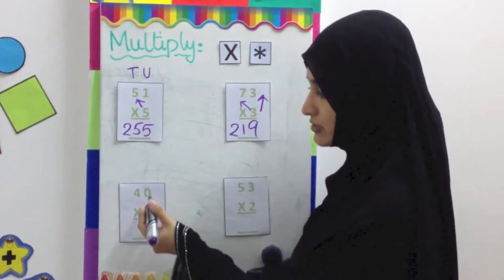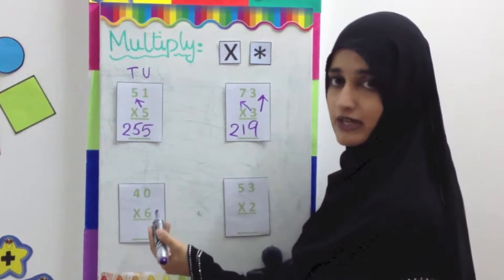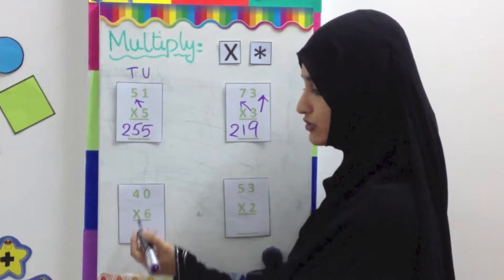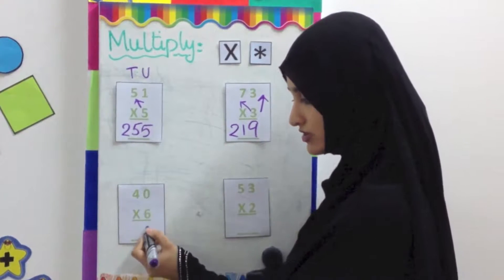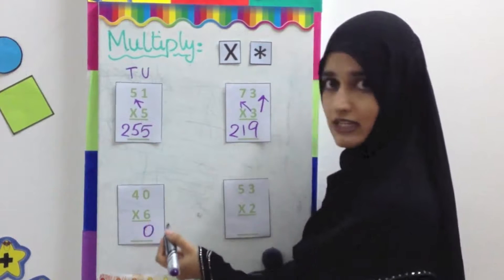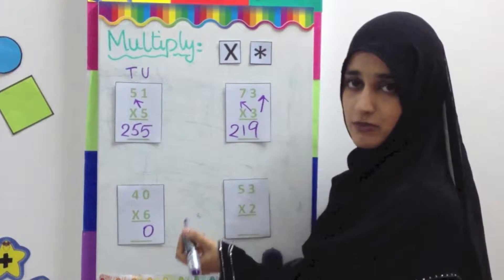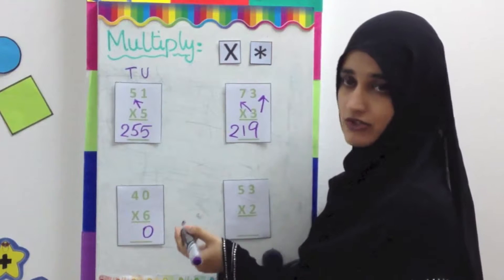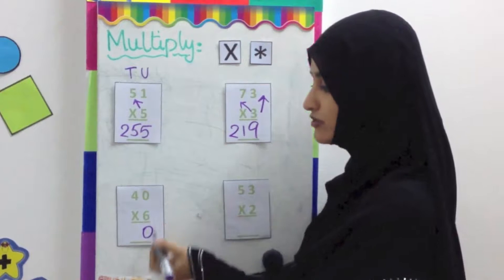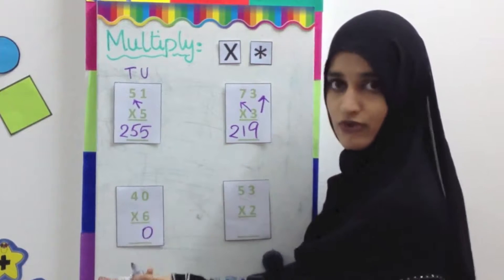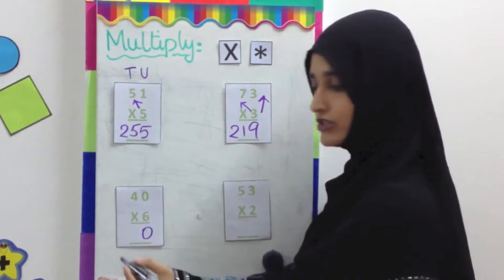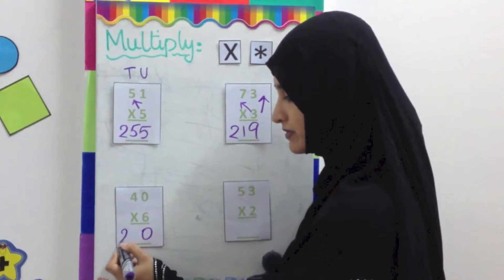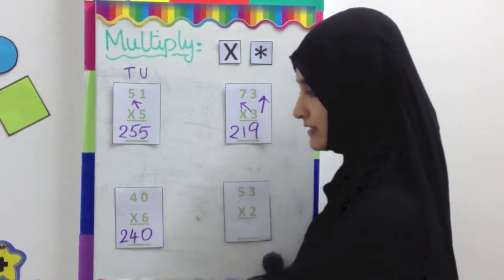This question here is 40 multiplied by 6. 6 zeros are 0 — any number that you multiply with 0 is 0. So 6 zeros are 0. 6 fours are 24. So the answer is 240.